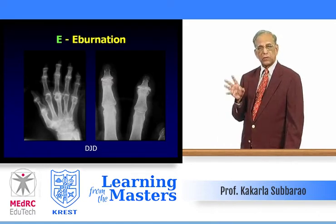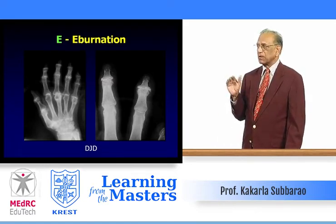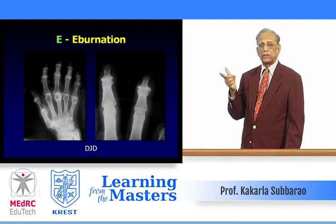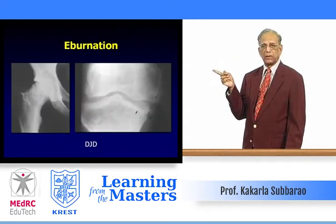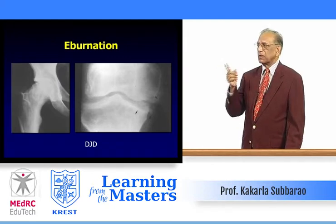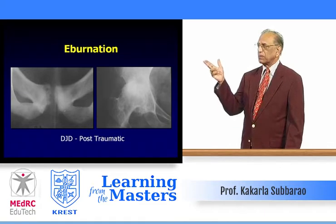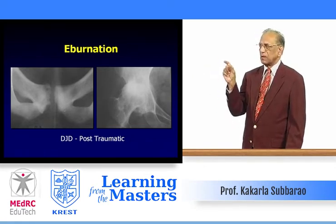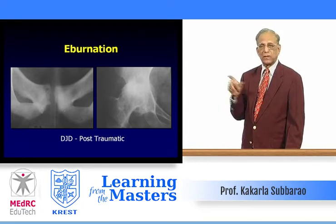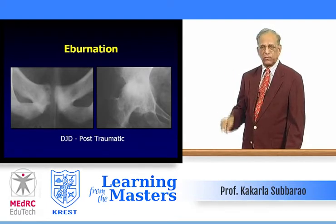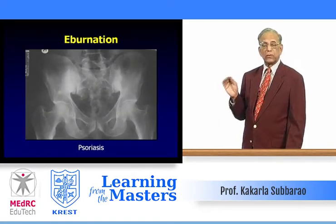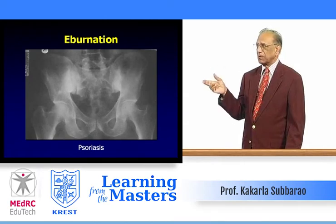Now E also represents eburnation — a combination of erosion and eburnation can occur. In erosive osteoarthritis and degenerative joint disease, eburnation is seen as reactive sclerosis adjacent to the arthrosis. Eburnation in the medial compartment of the femorotibial joint and in the hip, combined with enthesopathy and osteophytes, represents advanced degenerative joint disease. Post-traumatic cases may show eburnation at the pubic symphysis since primary osteoarthritis does not occur there.